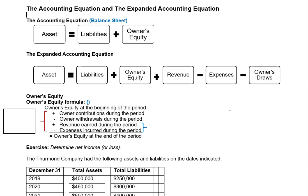Now let's talk about the owner's equity formula. The owner's equity formula is the same format as the owner's equity statement. It begins with the owner's equity at the beginning of the period, then we add any contributions that the owner made to the business during the period, then we subtract out any withdrawals the owner may have taken during the period, and we add in revenue earned during the period.